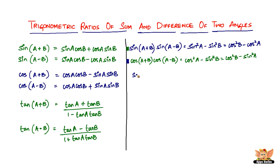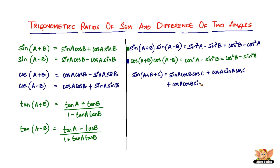Next we've got sine of three angles: sine of A plus B plus C, which is equal to sine A cos B cos C plus cos A sine B cos C plus cos A cos B sine C. It's not very complicated because it is quite cyclical — it is still logical.